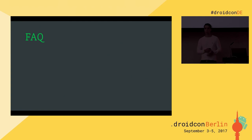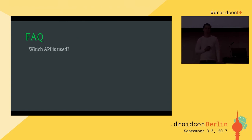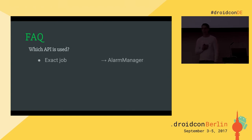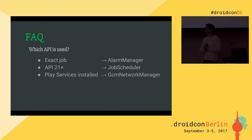I often receive the same questions about the library, so let's do a little FAQ. Which API is used? It depends on your job. If you have an exact job, we always use the AlarmManager — there's simply no other API for that. If on API 21 and above, we always use the JobScheduler. Below that, we use the GCM Network Manager if Google Play Services are installed. Otherwise the AlarmManager is the fallback.